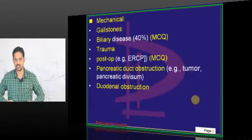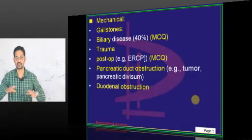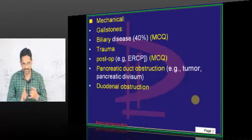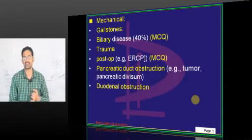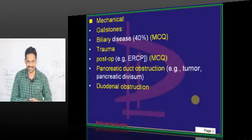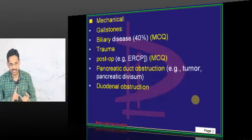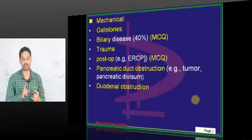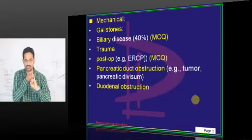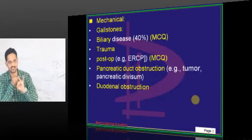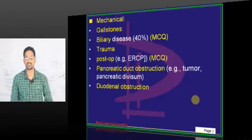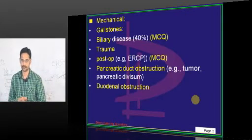X-ray signs in acute pancreatitis: the colon cutoff sign — because of spasm, the splenic and hepatic flexures contract, causing a sudden gas cutoff in the colon. Sentinel loop sign — because of paralytic ileus from pancreatitis, there can be an air-fluid level in the x-ray. The third sign is the renal halo sign. These are the three classic x-ray signs of acute pancreatitis.